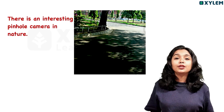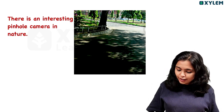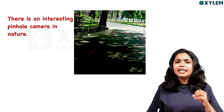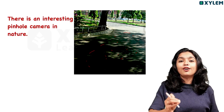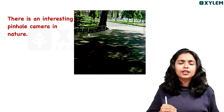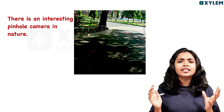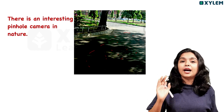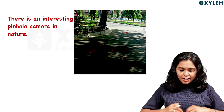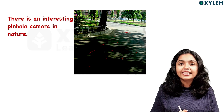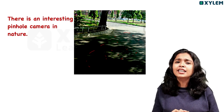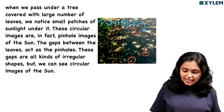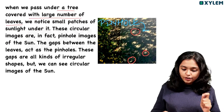We are able to see the small patches on the ground. In this way, we have the sun-spots. That's why we have a pinhole image. When we pass under a tree covered with a large number of leaves, we notice a small part of the tree.